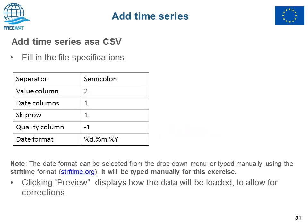As a result for this exercise, we will have the following specification: separator semicolon, value column number 2, date column 1, skip row 1, quality column -1 to indicate no quality column, date format %d/%m/%y. Please note that the date format is selected using strftime format, which you can see at strftime.org, or you can find pre-formatted options in the drop-down menu.